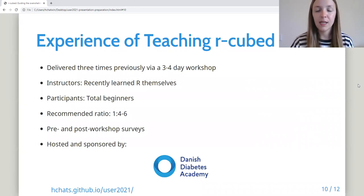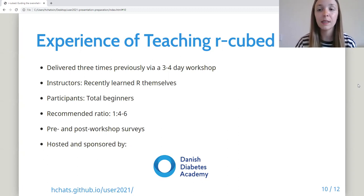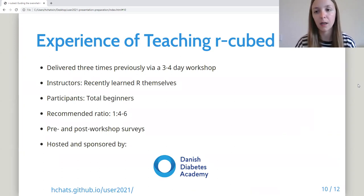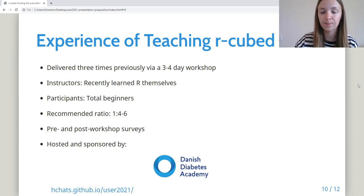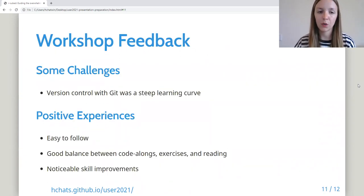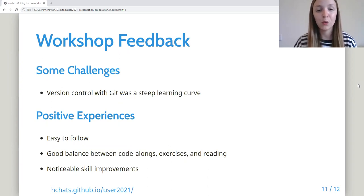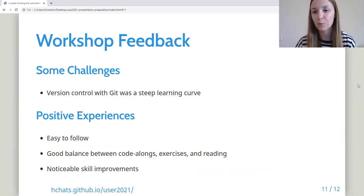We've delivered this three times previously as a three to four day workshop, where instructors are recent grads or postdoc researchers who have recently learned R themselves, which makes them more relatable to the participants. Participants are PhD and postdoc researchers who are total beginners in R. We've found that a ratio of one instructor to four to six participants works best. Participants complete pre and post workshop surveys, and we use their feedback to improve the material. Survey feedback shows that while version control with Git was a bit difficult for some, most participants found the module easy to follow with a good balance between teaching methods, and most saw noticeable skill improvements following the workshop.